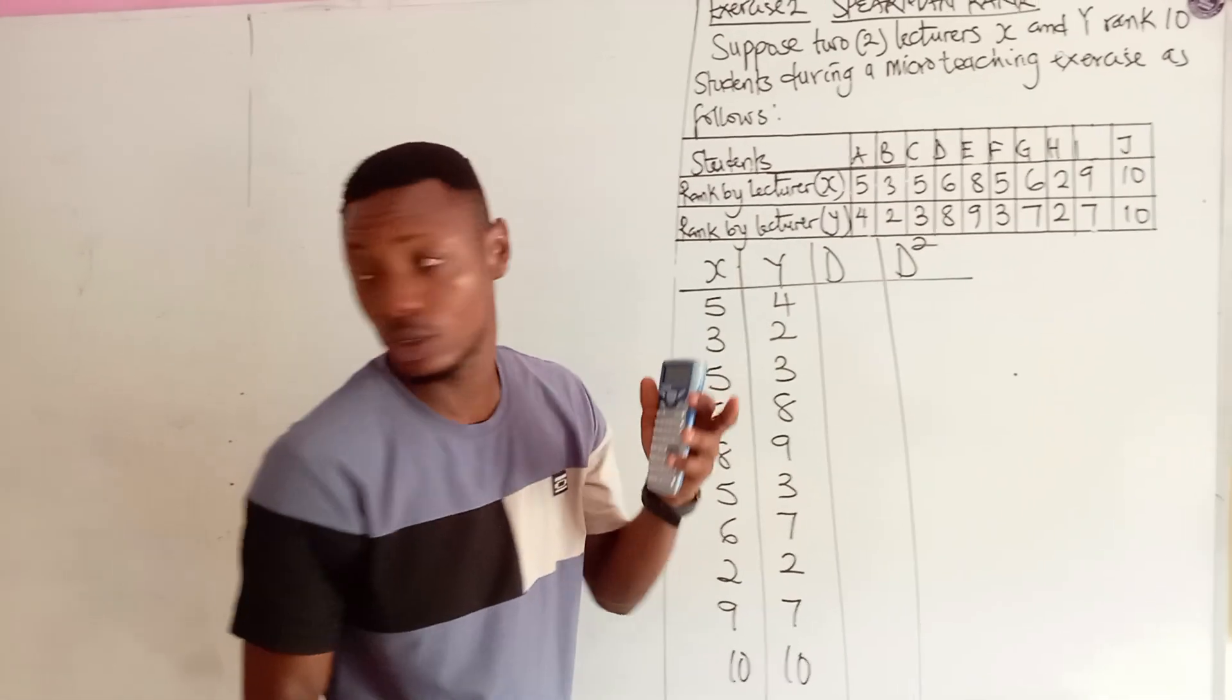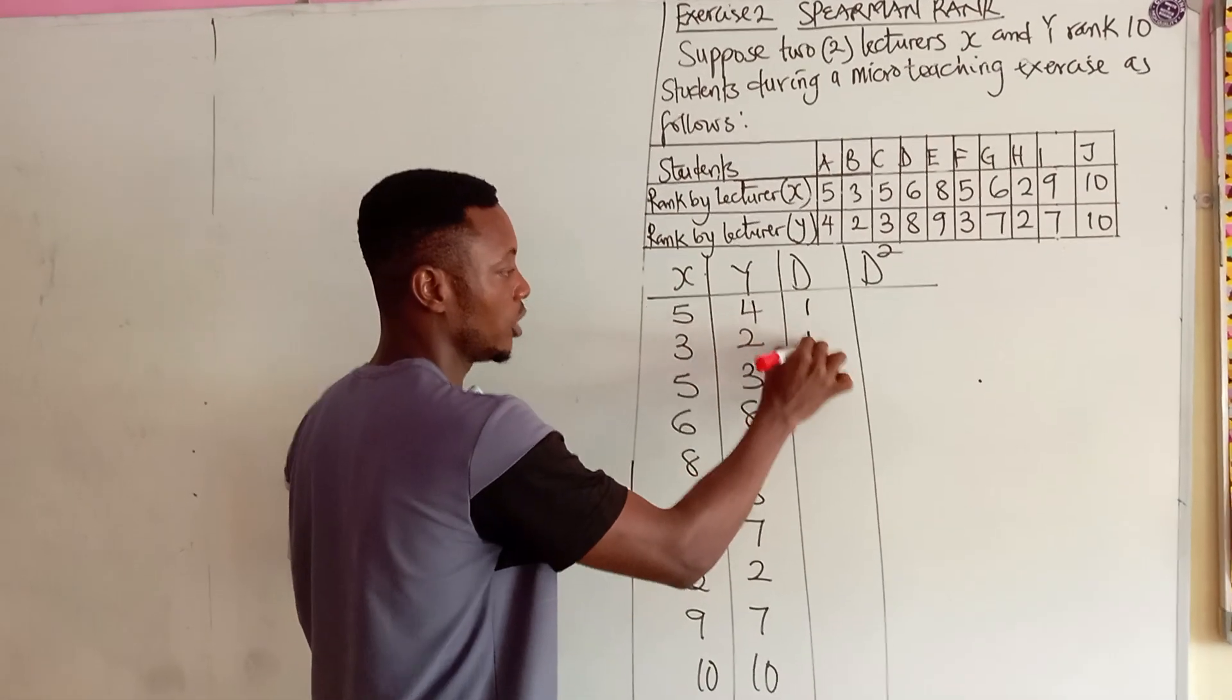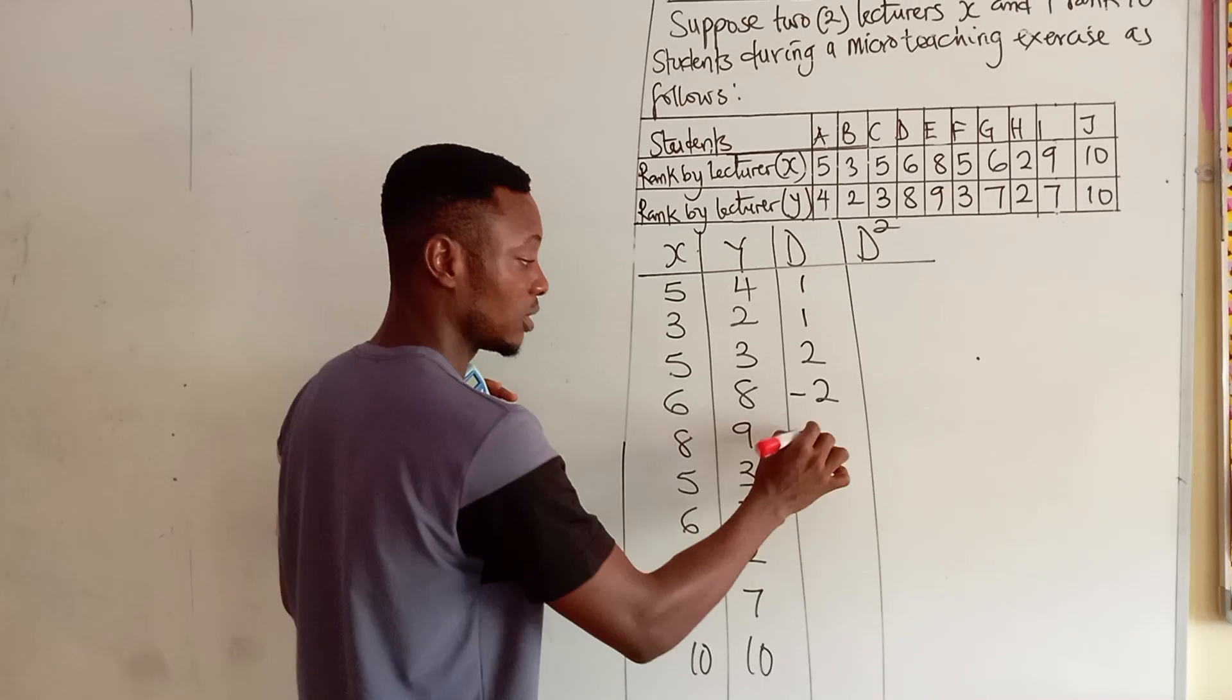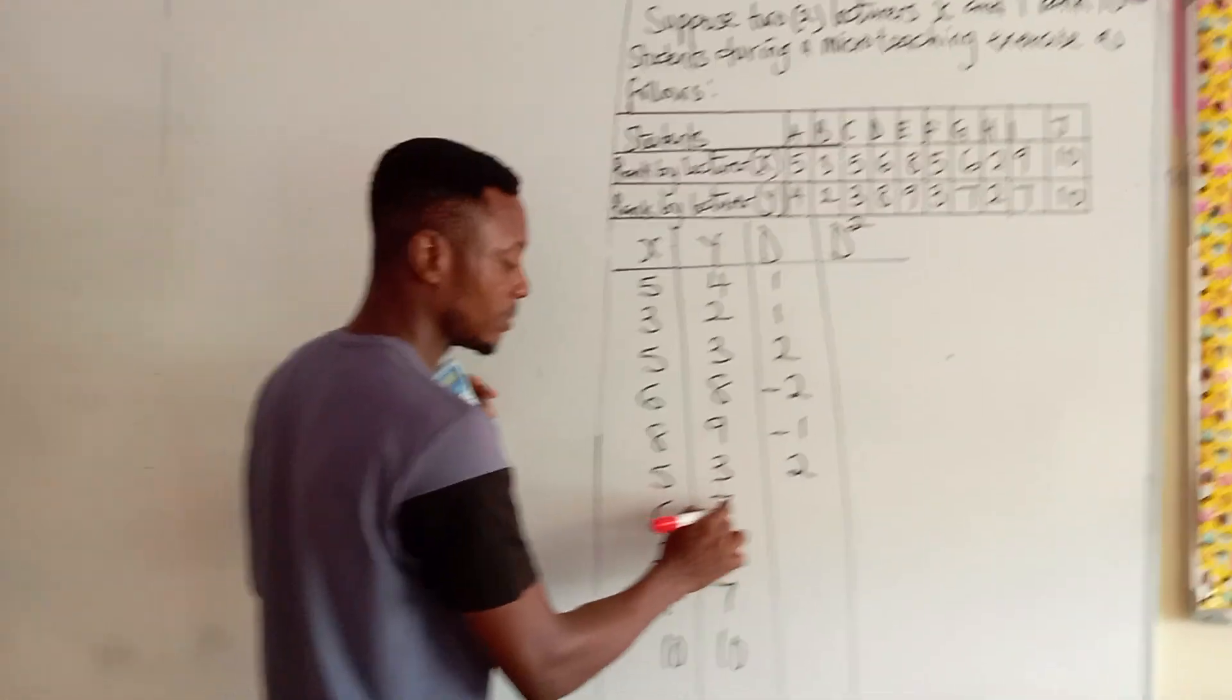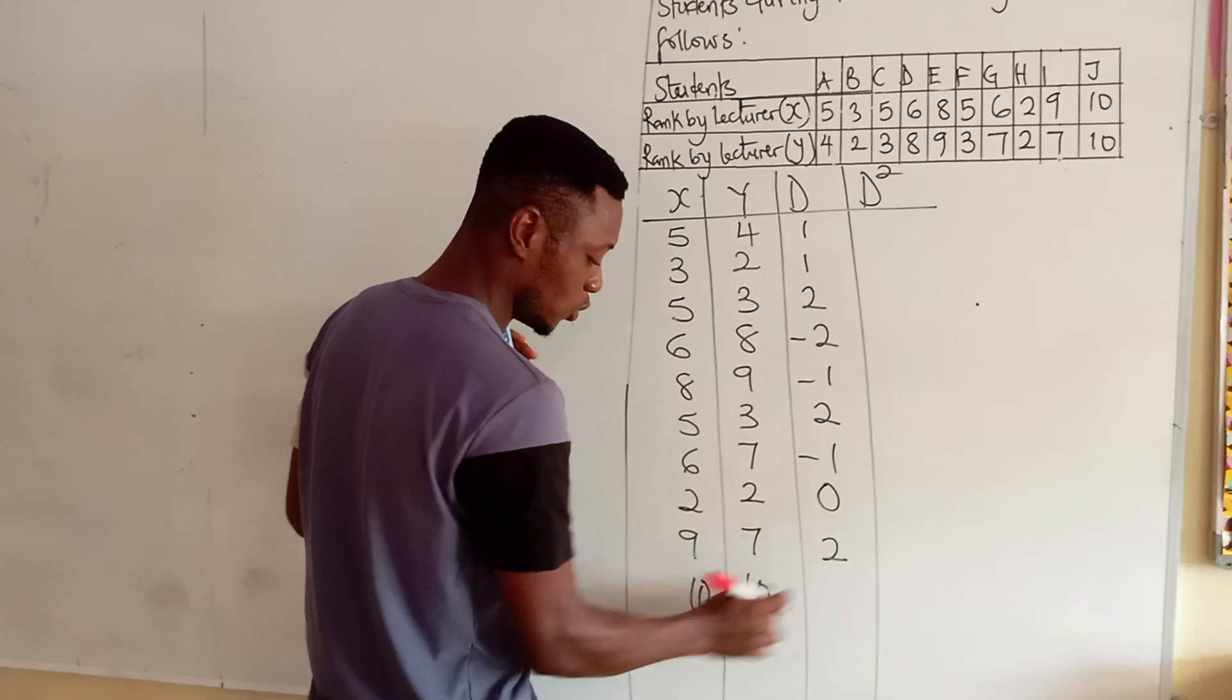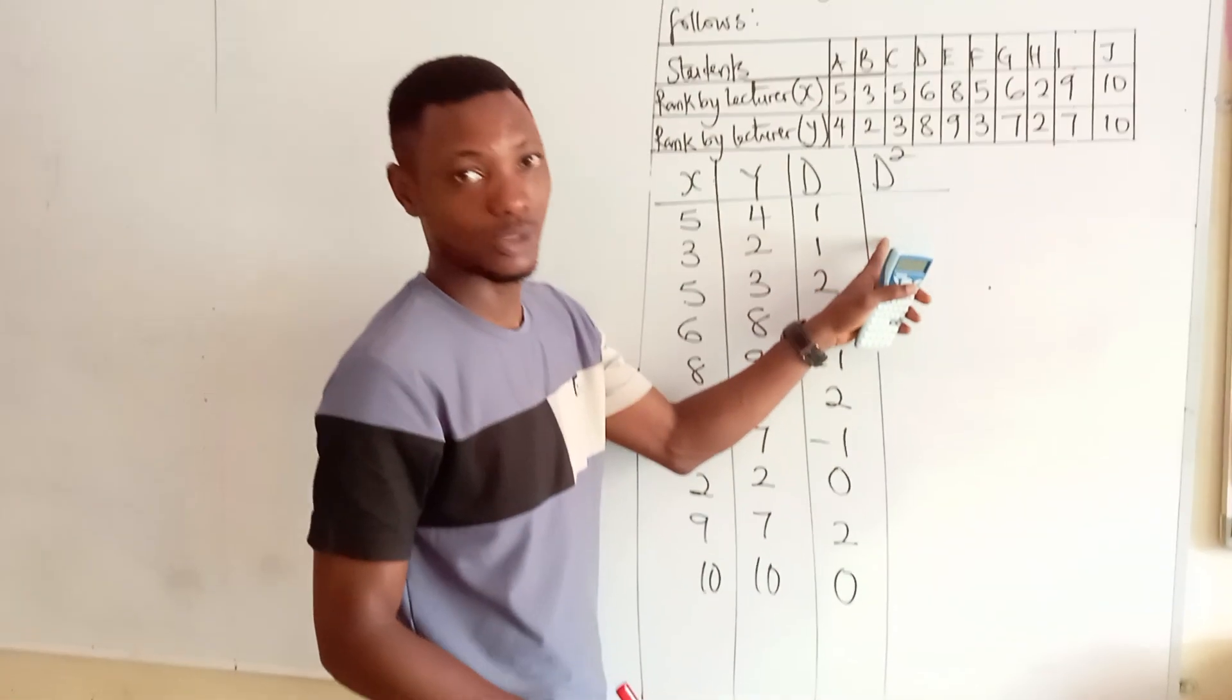Now, what do we do in our difference? We subtract. 5 minus 4 is 1, 3 minus 2 is 1, 5 minus 3 is 2, 6 minus 8 is minus 2, 8 minus 9 is minus 1, 5 minus 3 is 2, 6 minus 7 is minus 1, 2 minus 2 is 0, 9 minus 7 is 2, 10 minus 10 is 0. Then we go to our D².